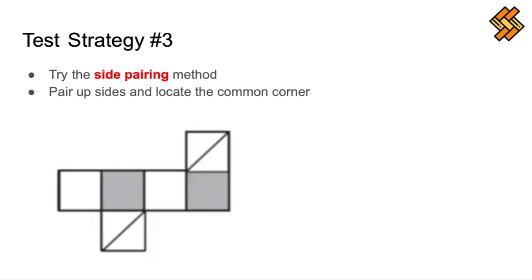Another strategy that can be very helpful is a mental tool called side pairing in which you pair up the sides. You can then locate common corners between the sides to then figure out the pattern of the faces. This is especially helpful for the dice problems which has six squares that will fold together to form a cube and you will definitely see some of these on the exam. Basically how this works is by matching up the sides that will fit together when it is folded.